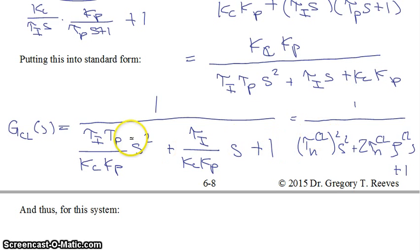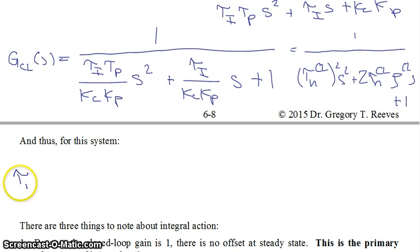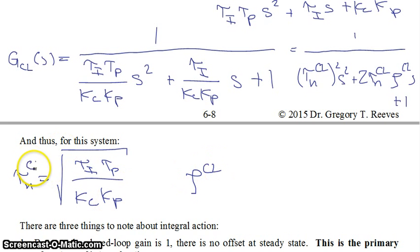Then we can look at this and calculate what is our tau n closed loop, we can look at this and tell then what is our zeta closed loop. And thus for this system what we have is that we have our tau n is equal to the square root of tau i tau p over kc kp. And our zeta closed loop is equal to 1 half the square root of tau i over tau p times kc times kp.